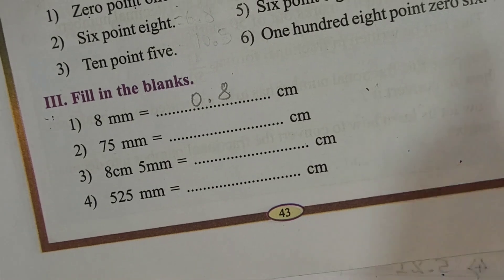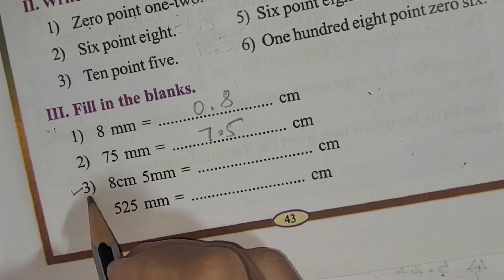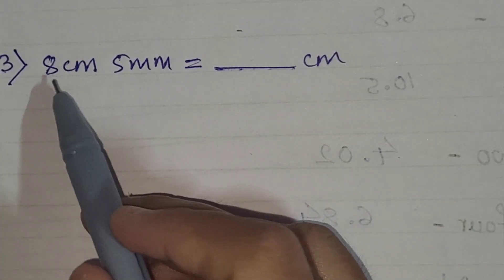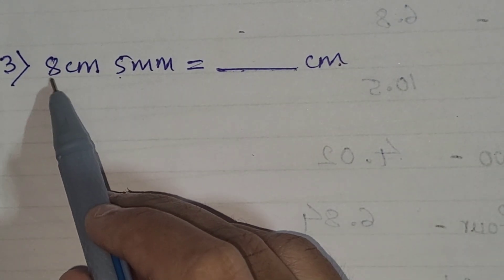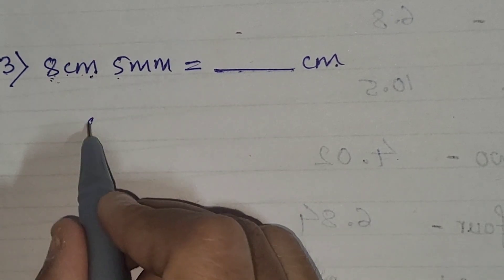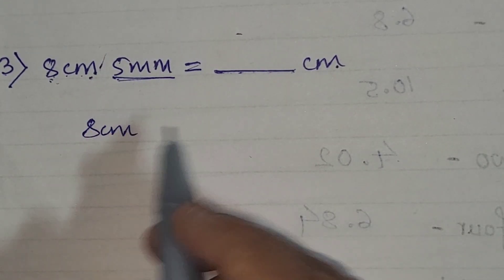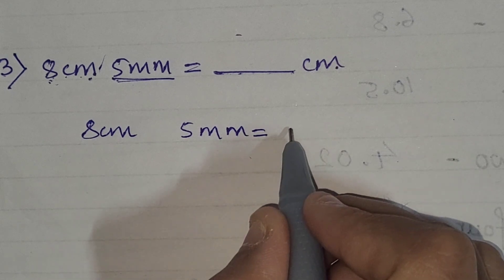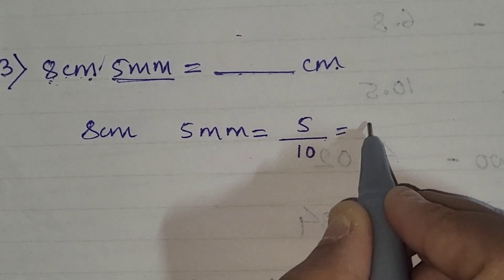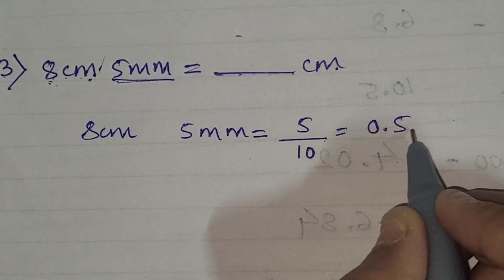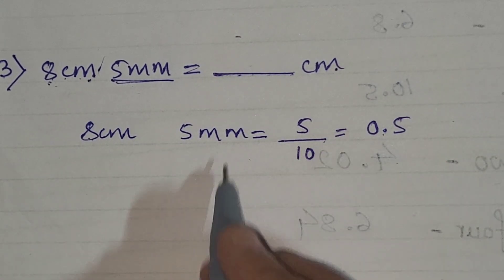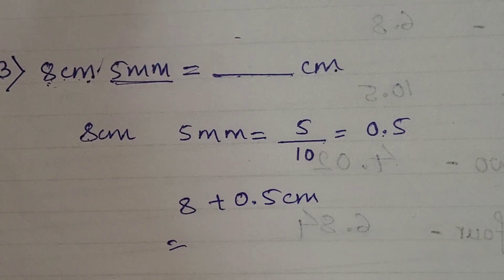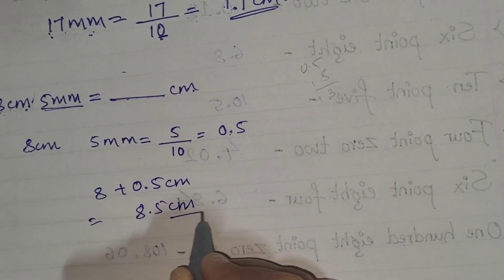So we write 7.5 centimeters. Now the third one: 8 centimeters 5 millimeters equals dash centimeters. We already have 8 centimeters, so keep that as-is. Now convert 5 millimeters: 5/10 equals 0.5. Add 8 and 0.5 centimeters, giving 8.5 centimeters as your answer.